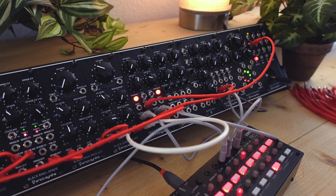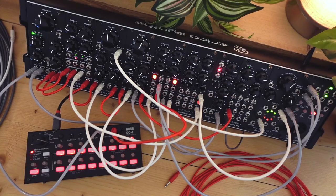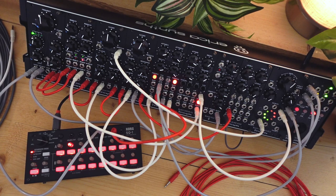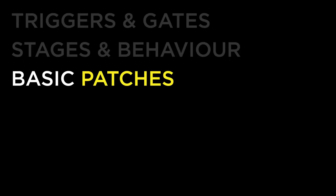An important thing is to check what the time range for each of the stages of the envelope is. For quick plucky synth lines, envelopes with fast and short times are fine. But when you are interested in slow evolving sounds when playing a voice, or in ambient, drone or generative patches, you want envelopes with stages that take a long time to complete. If you want ideas for envelopes, you can have a look at any of my videos because I use them all the time.